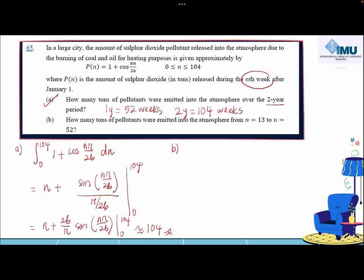Now how about part B? How many tons of pollutant were emitted into the atmosphere from n = 13 to n = 52? They clearly give you the interval in weeks: 13 to 52. The same function 1 plus cos(nπ/26), and you're going to integrate with respect to n.